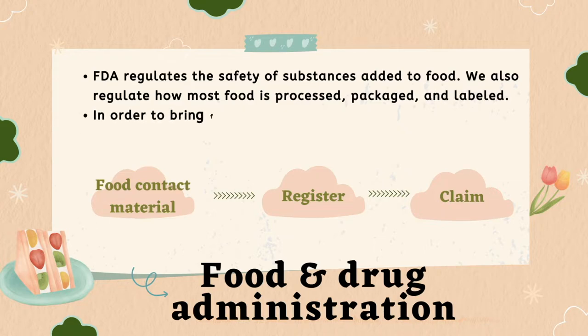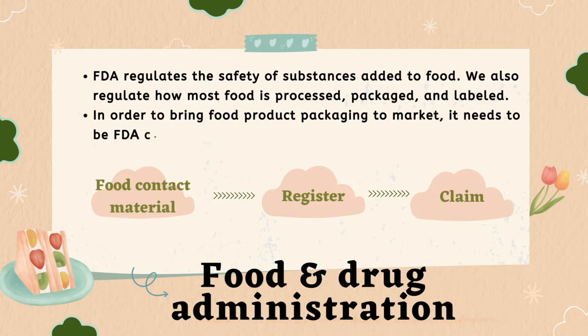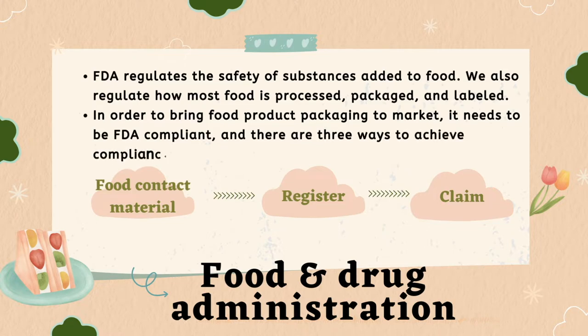Understanding the law is crucial to producing effective, safe, and legal packaging. To market food products, packaging must be FDA compliant in one of three ways. The materials used in the packaging determine the route. The first route to compliance relates to several established food contact items that are governed by FDA rules. Parts 170–199 of the 21 CFR contain these rules.